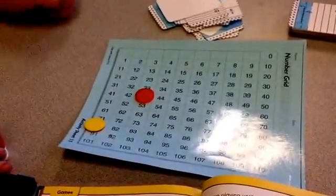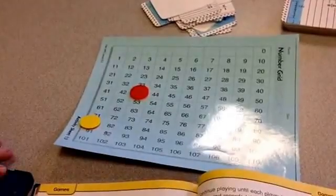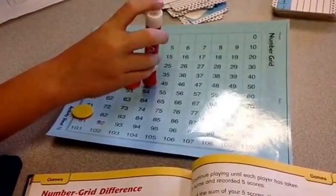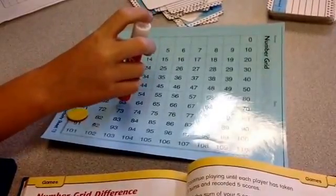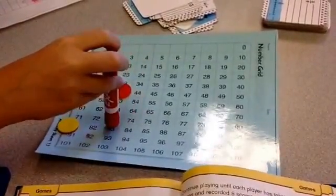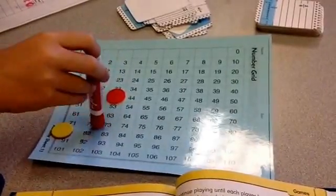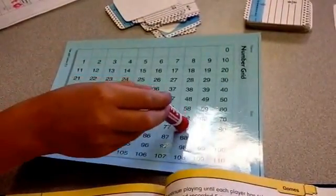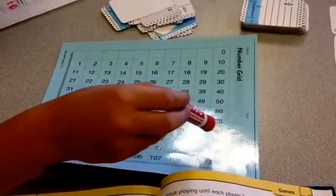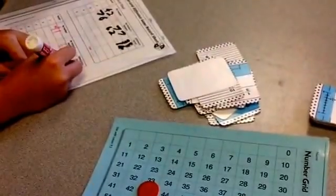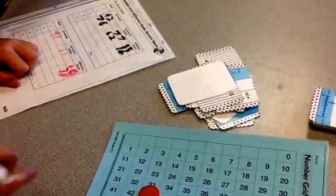Alright, now it's Jackson's turn to count to figure out the difference between 81 and 43. 20, 30. Now we can count by ones at 30. So 30. Oh, not backwards. 31, 33, 34, 35, 36, 37, 38.